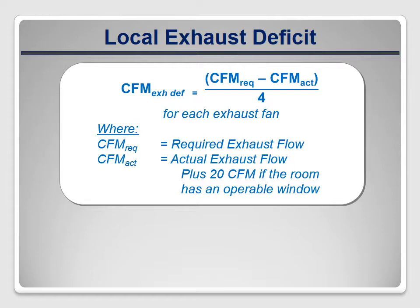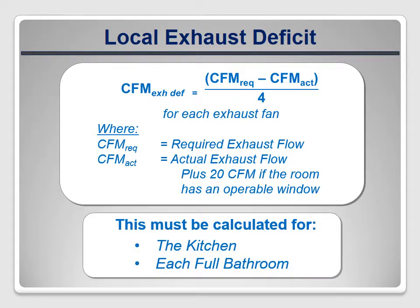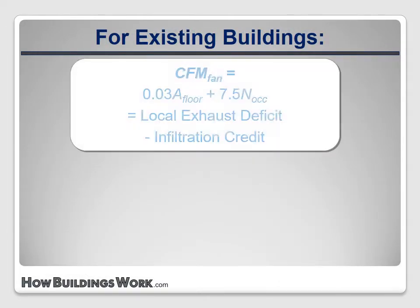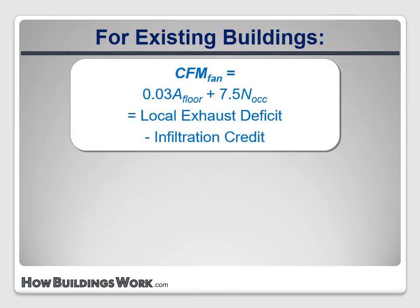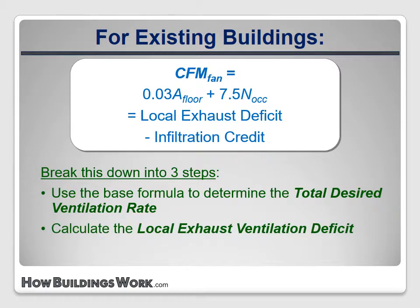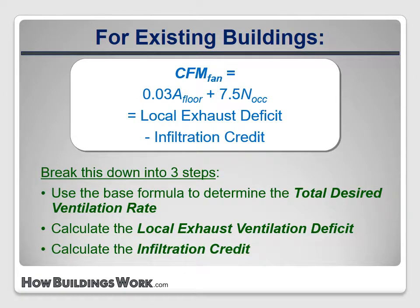This calculation must be done for each kitchen and full bathroom in the house. It doesn't apply to half baths because they don't generate any moisture. Tying this all together, we can break the calculations down into three steps: first, calculate the total desired ventilation rate using the base formula; next, calculate the local exhaust deficit based on actual exhaust flow measurements; and then apply the infiltration credit based on a blower door test result. With those three numbers, it's easy to calculate the whole house continuous CFM requirements.